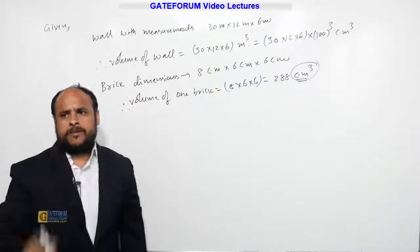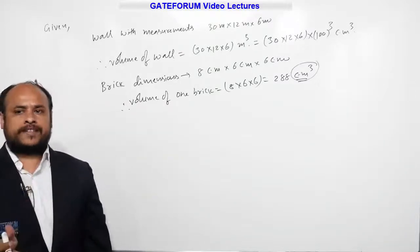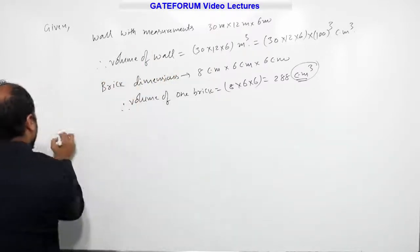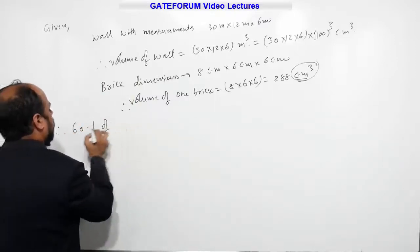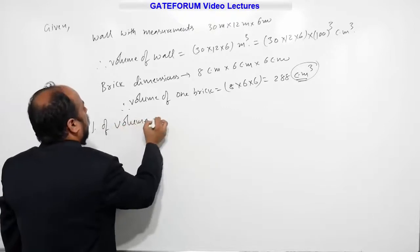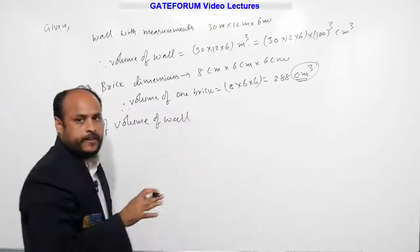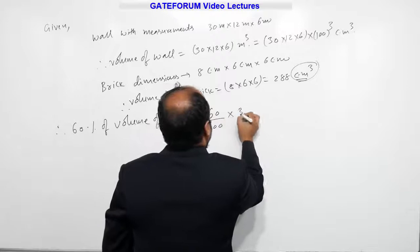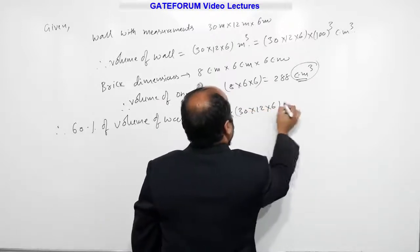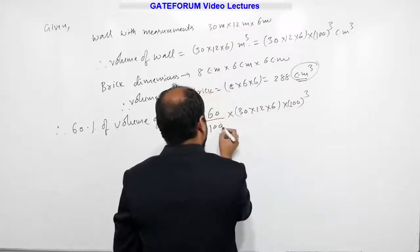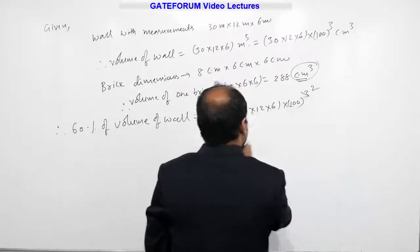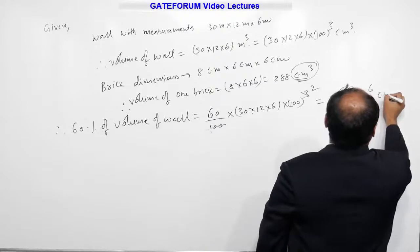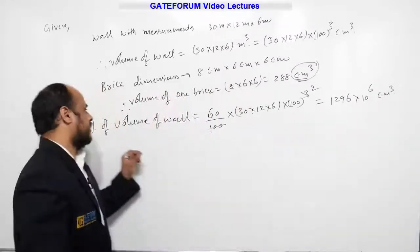One more statement from the problem: if 60 percent of the wall consists of bricks, then 60 percent of the wall means 60 percent of the volume of the wall is constructed by bricks. This is 60 by 100 into 30 into 12 into 6 into 100 cube. After simplification, this value comes to 1296 into 10 power 6 centimeter cube.